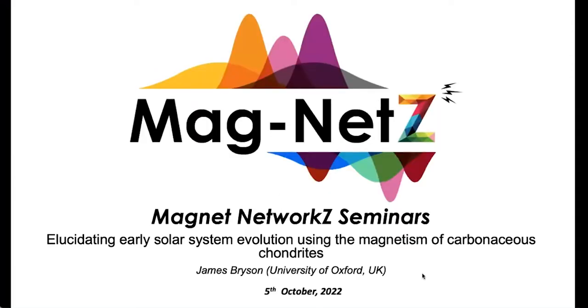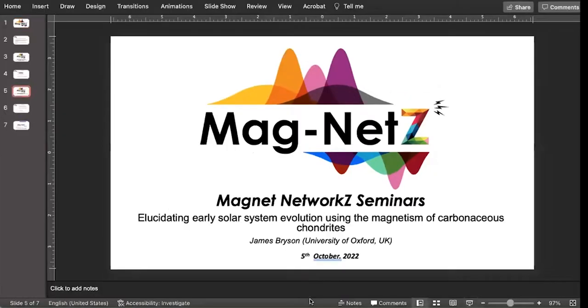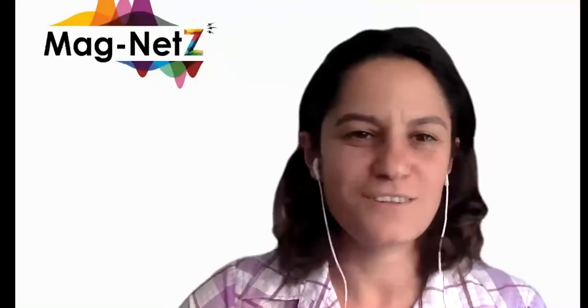So today we have James Bryson from the University of Oxford in the UK presenting the talk entitled Elucidating Early Solar System Evolution Using the Magnetism of Carbonaceous Chondrites. Thanks James, please go ahead and share your screen. The floor is yours.